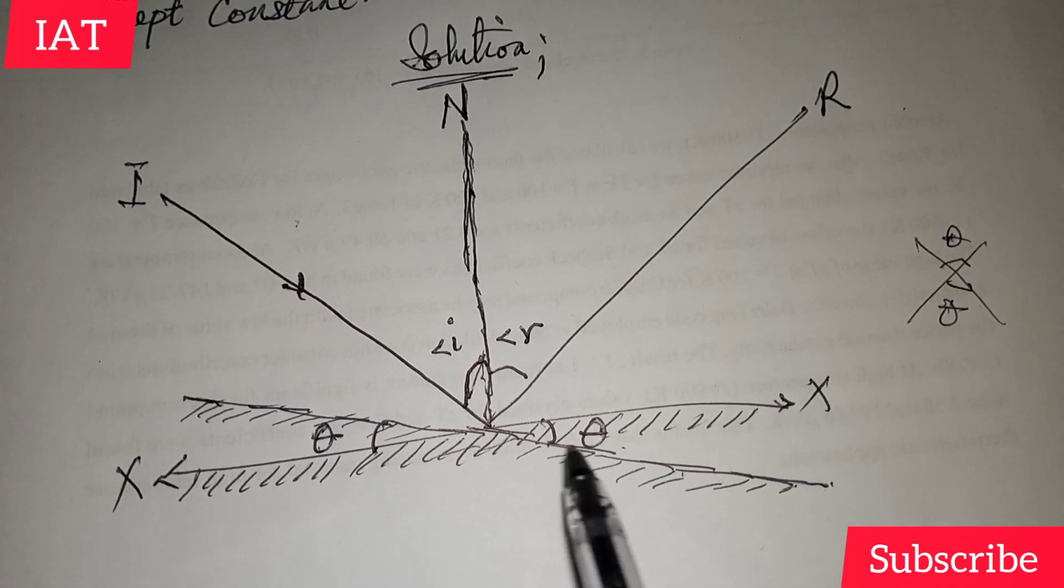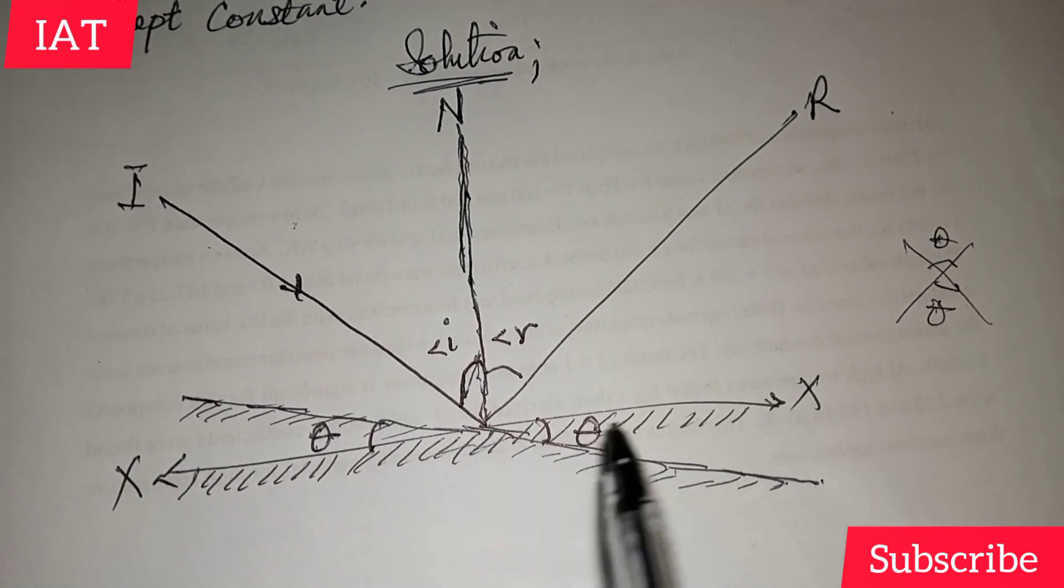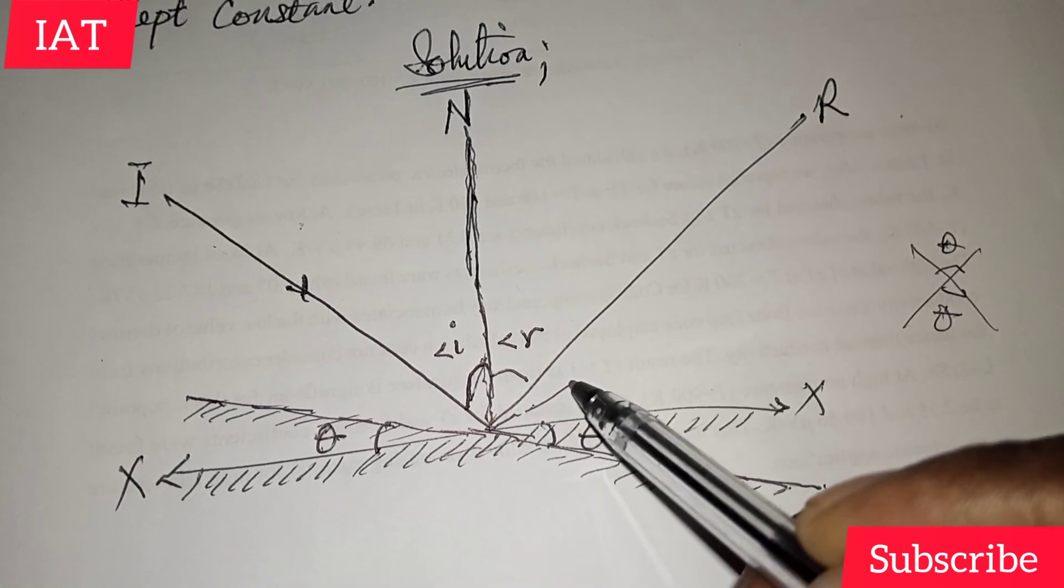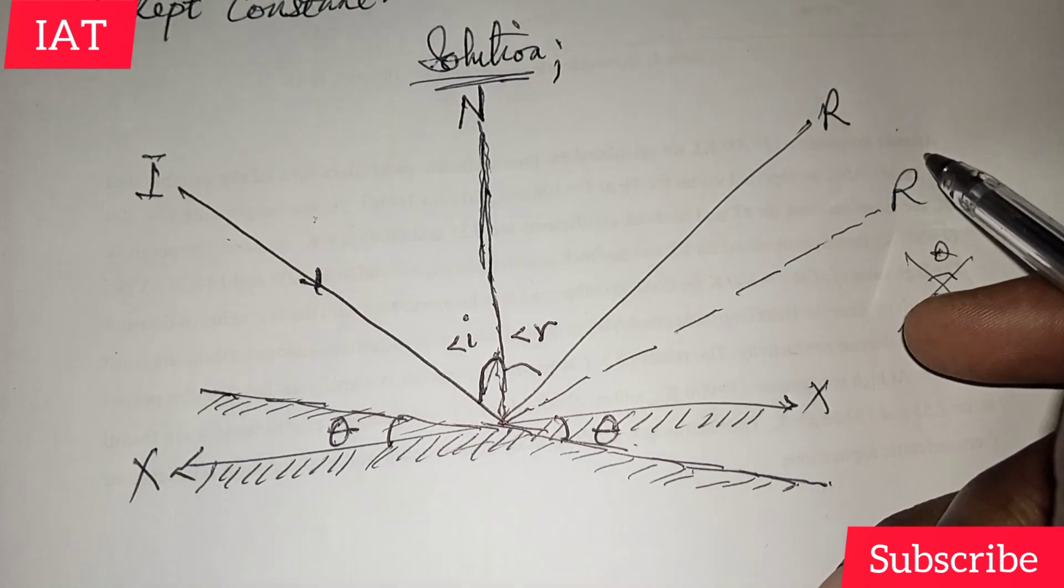Since it is also a plane mirror, and then we have the angle of incident, we will have that this ray reflects towards its direction too. So that means we have our r prime.